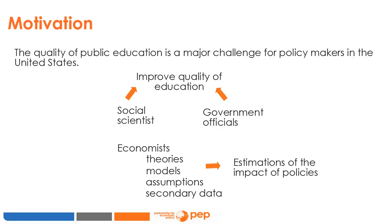Economists are often consulted because we have well-developed theories about what drives the quality of education. These theories can be formally written down using mathematical models, which in turn can be estimated with the help of some theoretical assumptions on secondary data. Secondary data refers to all kinds of information collected by someone other than the user. Common sources include censuses, surveys, administrative data, organizational records, and tax records.